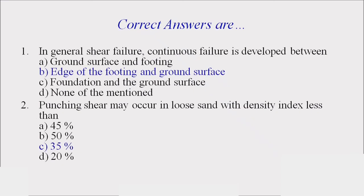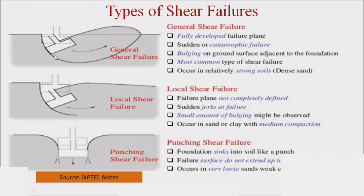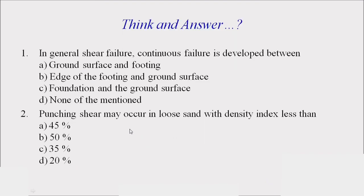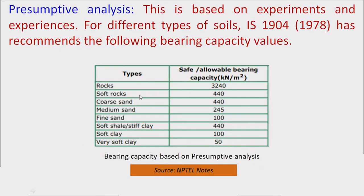For the review questions: the correct answer to the first question is 'edge of footing to ground surface.' For the second question, the correct answer is 35% density index — if the density index is less than 35%, it corresponds to punching shear failure. These are based on presumptive analysis from experiments and experience.